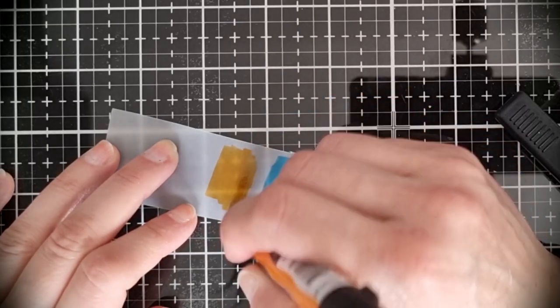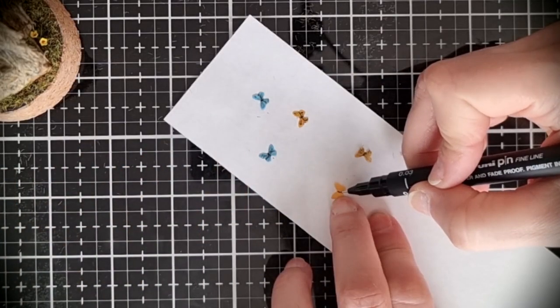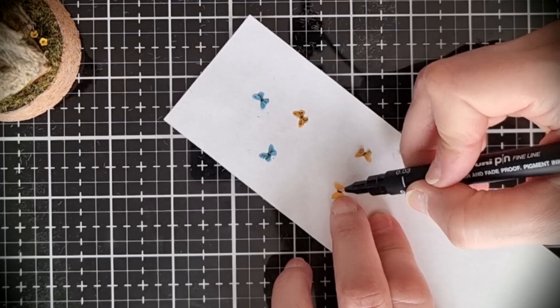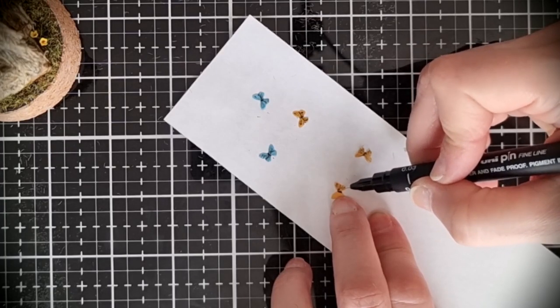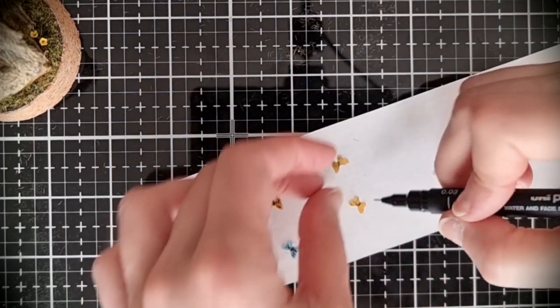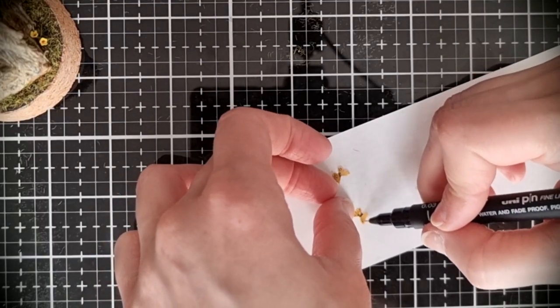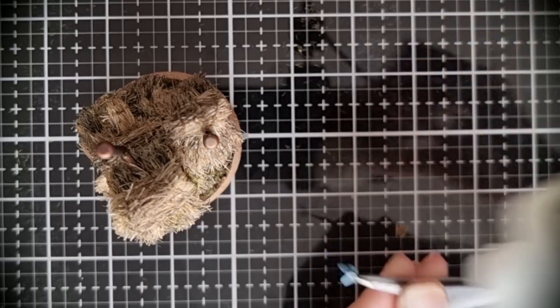The final touch were a few butterflies. I colored a bit of vellum with alcohol markers and die cut these tiny tiny butterflies. Then I added details to the body and wings with a very fine pen and they were ready to find a home on this tiny shack.